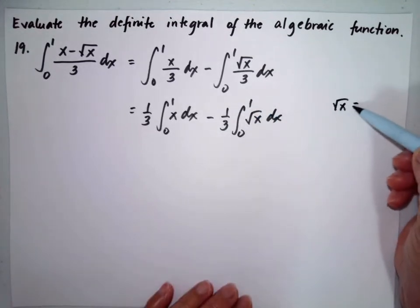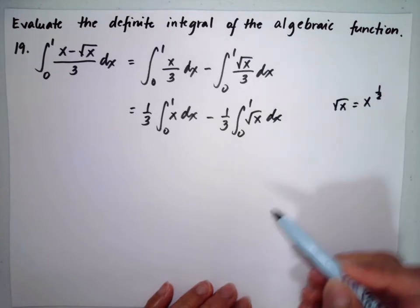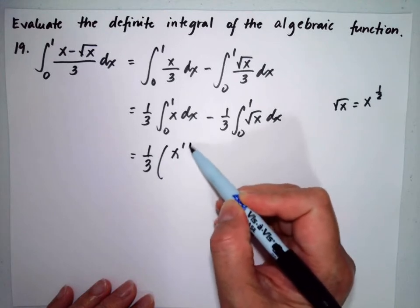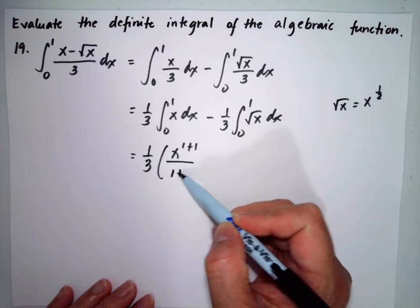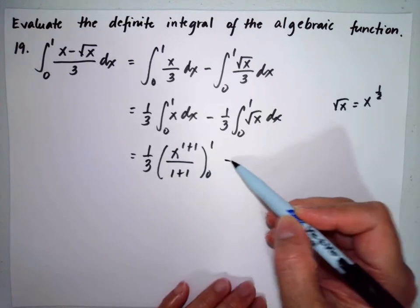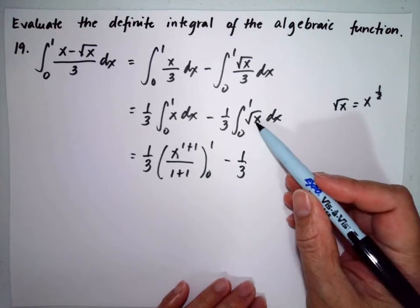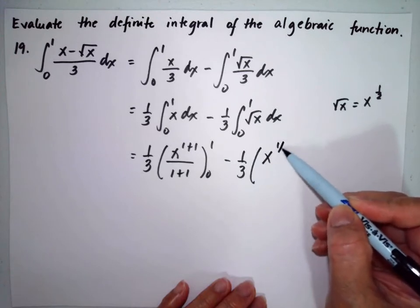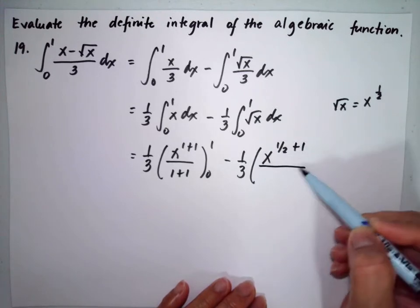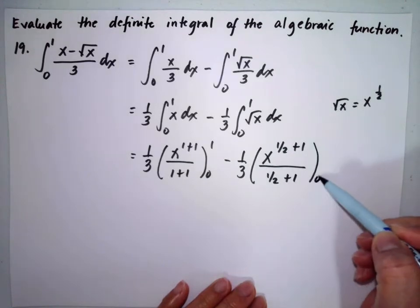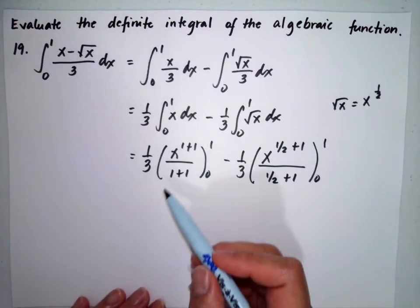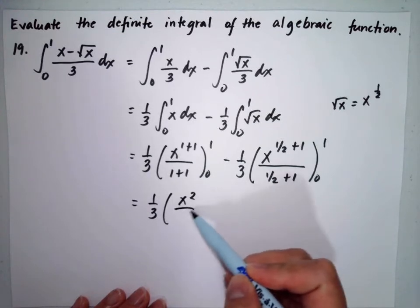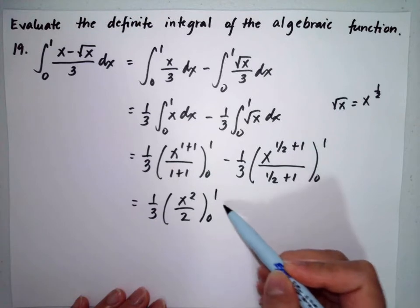The square root of x is equal to x to the 1/2. So this will be equal to 1/3 times x to the (1+1) over (1+1) from 0 to 1, minus 1/3. The square root of x is x to the 1/2, so x to the (1/2 + 1) over (1/2 + 1) from 0 to 1. We can simplify this as 1/3 times x squared over 2 from 0 to 1, minus 1/3.